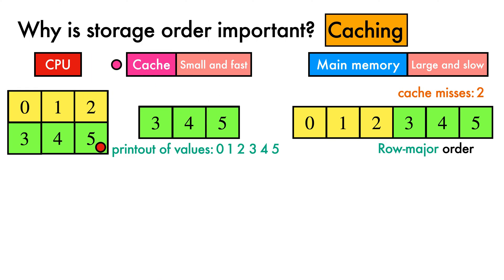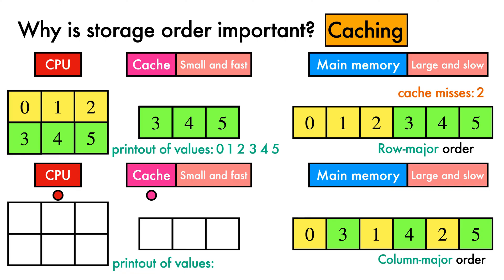In total, we've had two cache misses, and therefore two slow trips out to main memory. Now suppose that we perform the same task of printing elements in ascending order, but this time the data is stored in column major order.